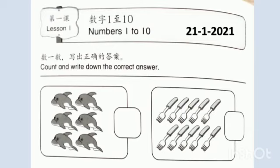Now, let's count how many dolphins here. 1, 2, 3, 4, 5, 6. So, the answer is 6.